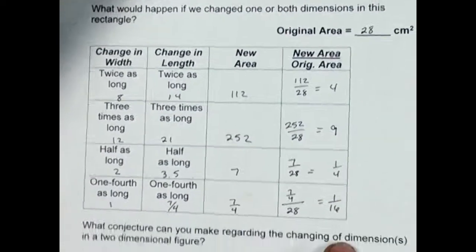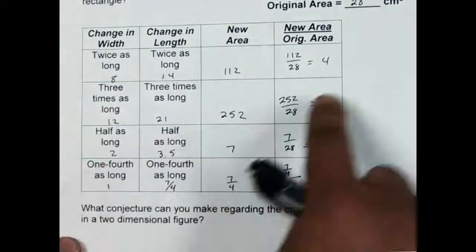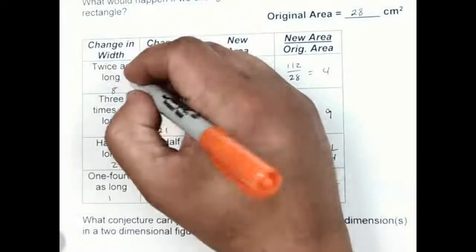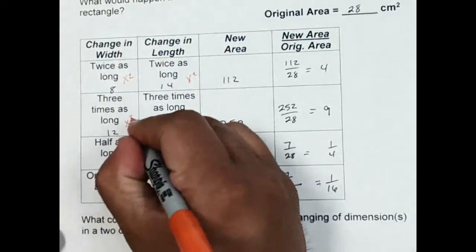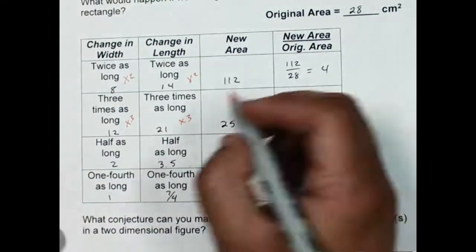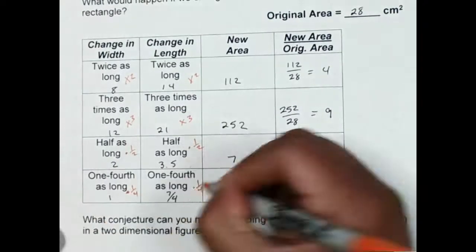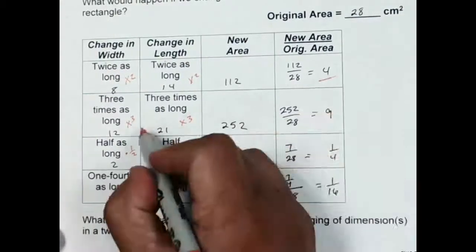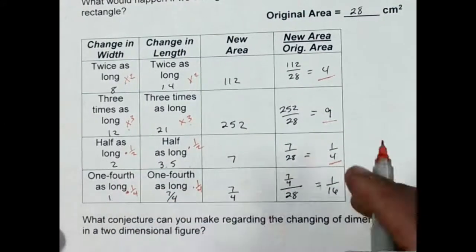The question is: is there a pattern? When I change these dimensions, how does it affect my new area? If I look at this, I changed the width by a factor of 2 and the length by times 2. Here I did times 3 for the width and times 3 on the length. Here I did times 1 half and times 1 half, and then times 1 fourth and times 1 fourth. Well, times 2 times 2 gives a factor of 4; 3 times 3 gives 9; 1 half times 1 half gives 1 fourth; 1 fourth times 1 fourth is 1 sixteenth.